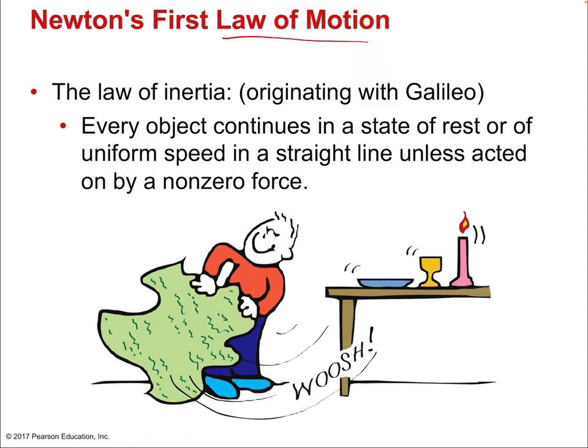The first of Newton's three laws is the Law of Inertia. Each of the three laws has this kind of nickname. The first one is the Law of Inertia. This really is like Galileo's principle of inertia — you can think of the first law as a refinement of what we talked about in the previous lecture. What it states is that every object continues in a state of rest or of uniform speed in a straight line unless acted on by a non-zero force. You have to push or pull something in order for it to speed up, slow down, or turn. Otherwise, objects will just continue moving in straight lines at constant speed.